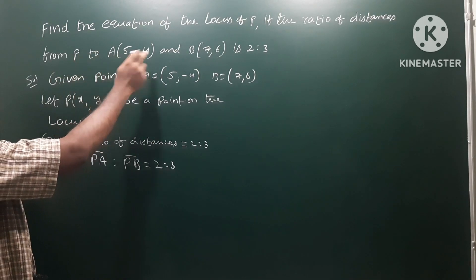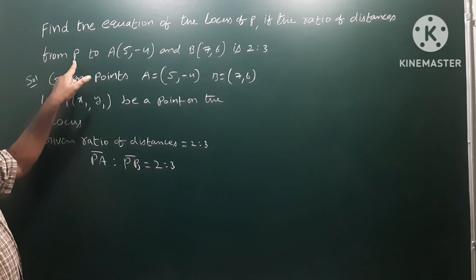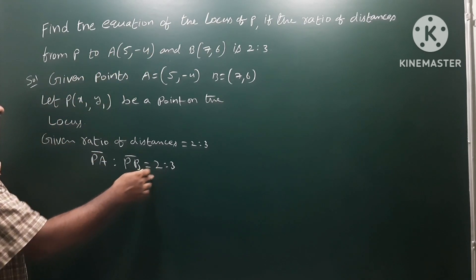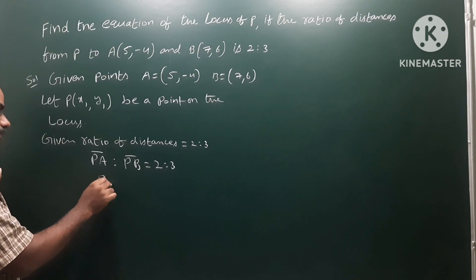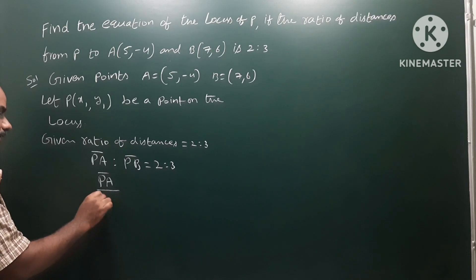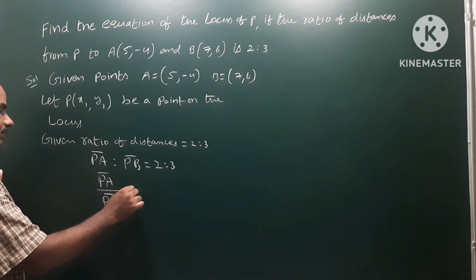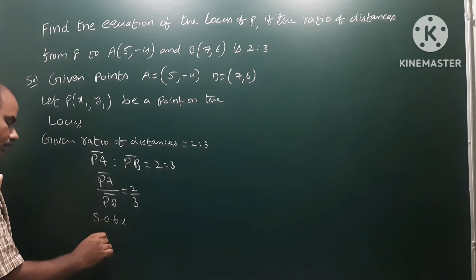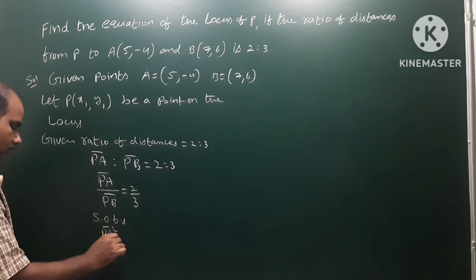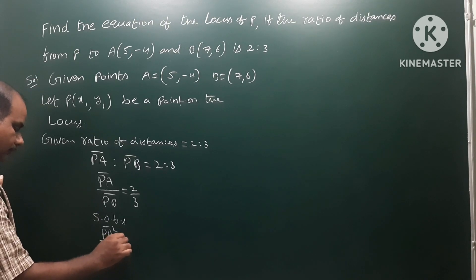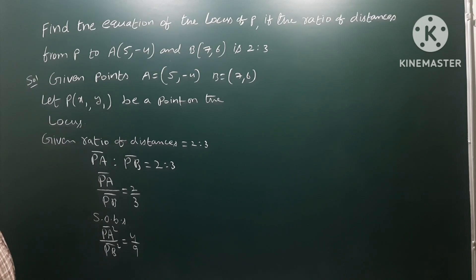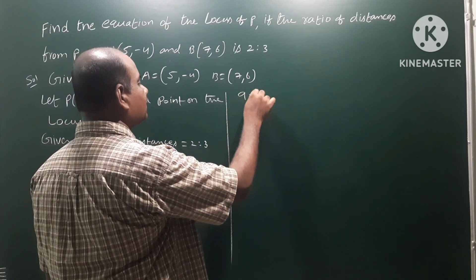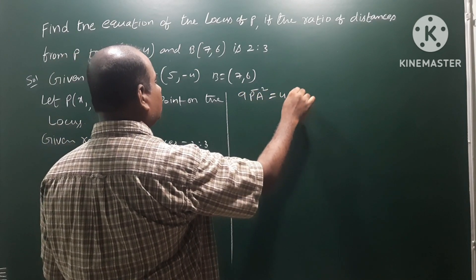P to A distance is PA and P to B distance is PB. So PA is to PB is equal to 2 is to 3 — that is given. This ratio can be written as PA by PB equals 2 by 3. Squaring on both sides: PA square by PB square is equal to 4 by 9. By cross multiplication, 9 PA square is equal to 4 PB square.